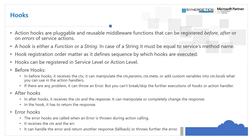Before hooks receive the context and can manipulate context parameters, meta, and add custom properties into context.locals that you can use in action handlers — since before hooks execute before the action method. If you want to make changes to the request or add extra parameters to the context, you can do that with hooks. You can throw an error from the hook, but the actions will continue executing.